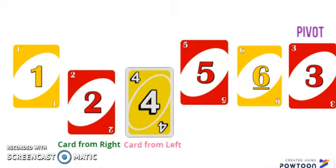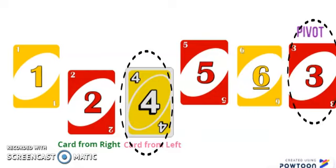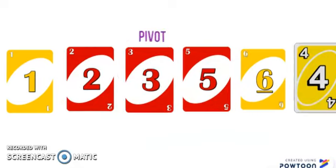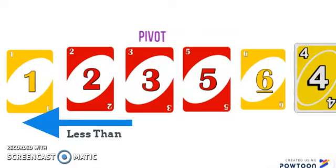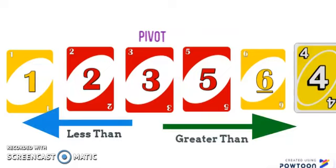The last step is going to be switching the card from the left and the pivot. We have now finished sorting the set of cards using the Quicksort algorithm. The cards to the left of the pivot are less than it, and the cards to the right of the pivot are greater than the pivot.